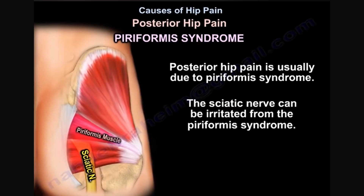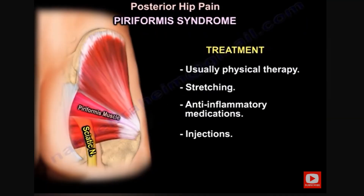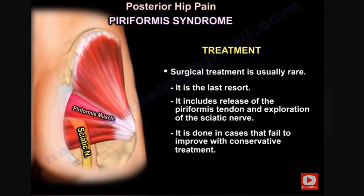Posterior hip pain, such as pain in the buttock, is usually due to piriformis syndrome, where the sciatic nerve can be irritated. Treatment is usually conservative: anti-inflammatory medications, physiotherapy, stretching, and injections. Surgery is the last resort and is rarely needed. It includes release of the piriformis tendon and exploration of the sciatic nerve, and is done when conservative treatment fails to provide relief.